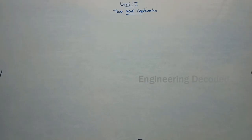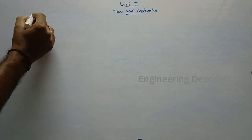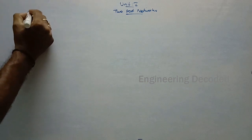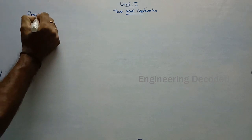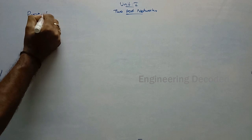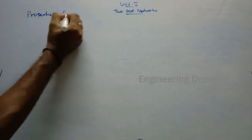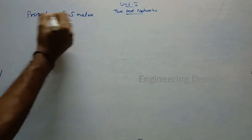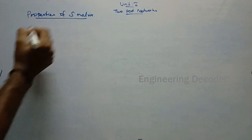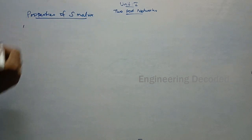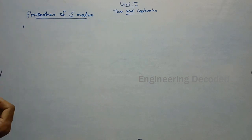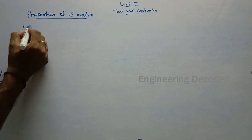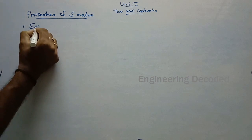Good morning. In today's class we will see about the various properties of S-matrix. We have five properties for an S-matrix. The first property is that an S-matrix is always a square matrix.